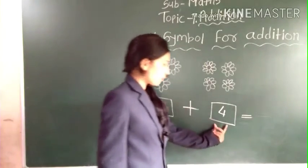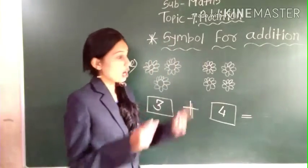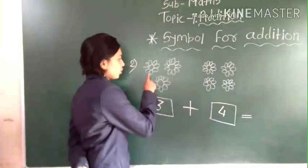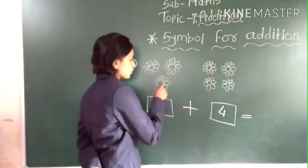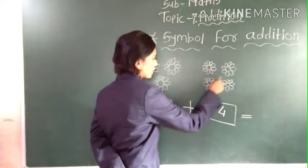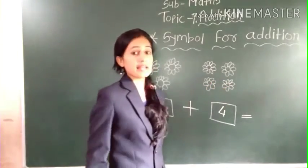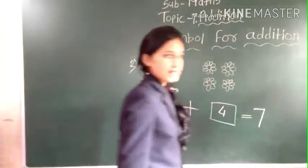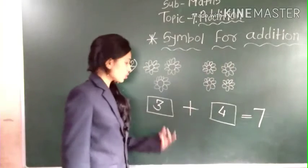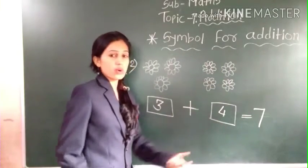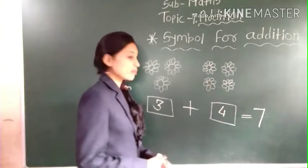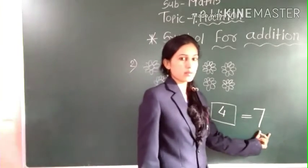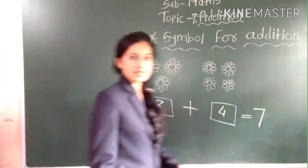Three and four — how many total flowers? Let's count: one, two, three, four, five, six, seven — seven flowers. So we write here seven. Three and four makes seven.